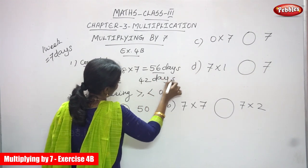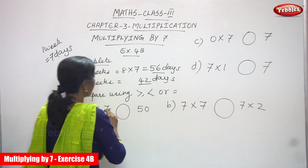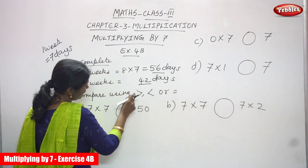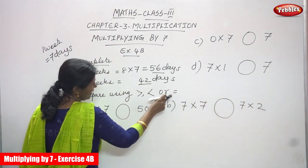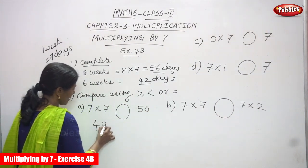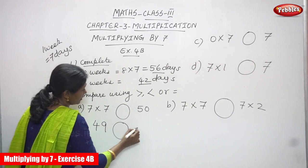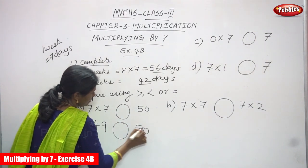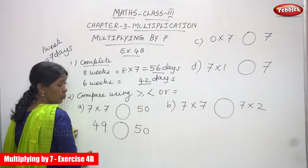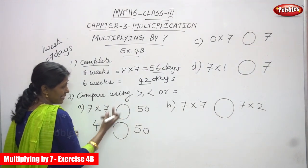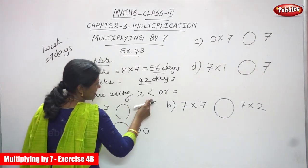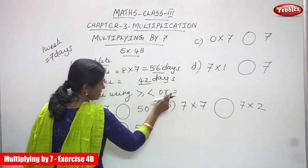This is the right answer. Now compare using greater sign, lesser sign, or equal sign. So 7 sevens are — what is the answer? 49. Then you have to draw the circle. You have to write the symbols: whether it is greater, lesser, or equal. This is a greater sign, this is a lesser sign, and this is an equal sign.